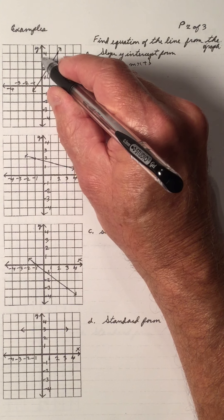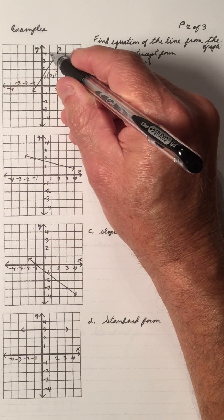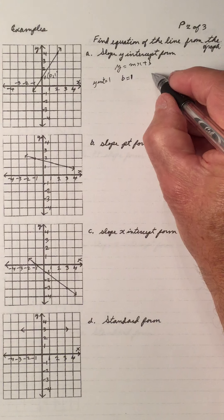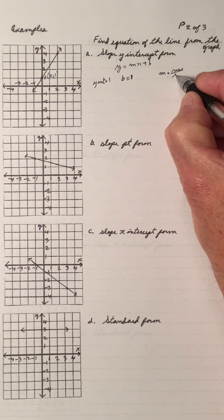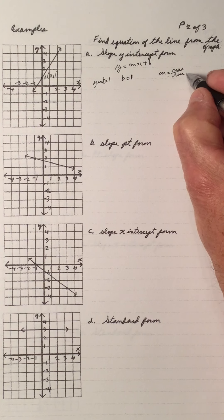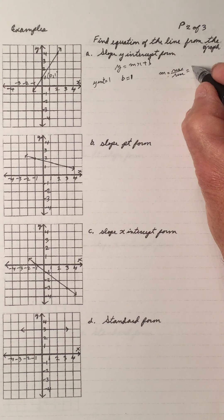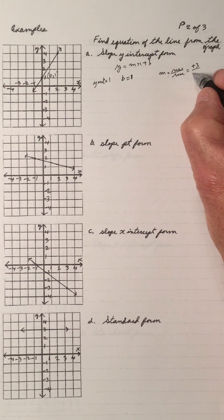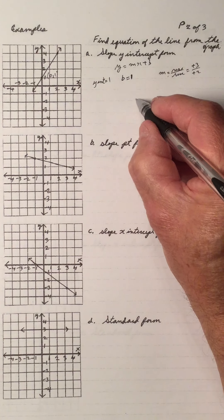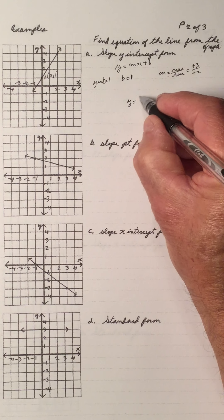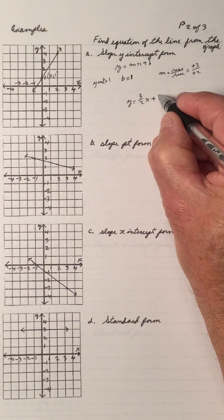For the slope, I'll go from this point to this point. Going up 3 and right 2. So the slope is rise over run, which is positive 3 over positive 2, because it's up to the right. So the equation of the line is y equals 3 over 2 times x plus 1.